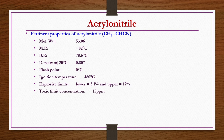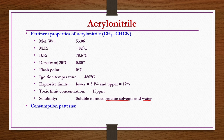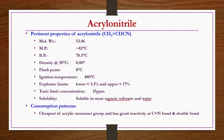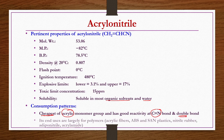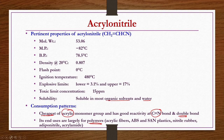The toxic limit concentration is only 15 ppm — it is very toxic. It is soluble in most organic solvents as well as in water. Amongst acrylic compounds, it is the cheapest one and has good reactivity at both the C≡N and the C=C double bond in its molecular structure. It is used for production of acrylic fibers, ABS and SAN plastics, nitrile rubbers, adiponitrile, acrylamides, etc.